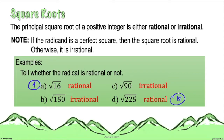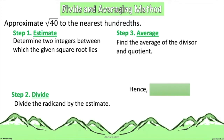Let's say we are to approximate the square root of 40 to the nearest hundredths. Step 1 is to estimate — you determine two integers between which the given square root lies. The radicand is 40, so identify two perfect squares where 40 is in between. These are 36 and 49.